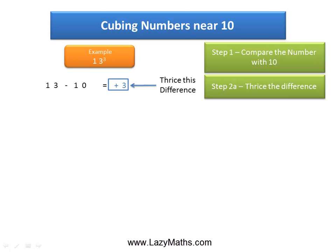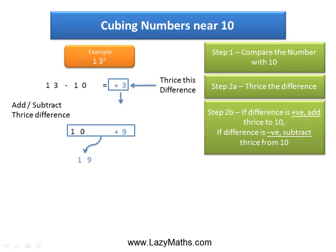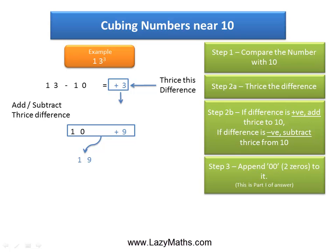3 times positive 3 is positive 9. The next step is to add the difference to 10, so 13 plus 10 is equal to 19. Then the last step for part 1 is to append two zeros to 19, or multiply 19 with 100, so we get 1,900. This is part 1 of the answer.